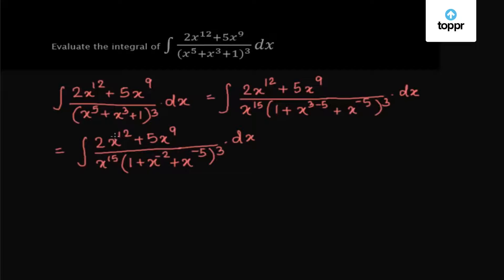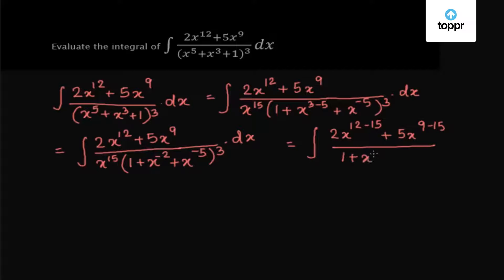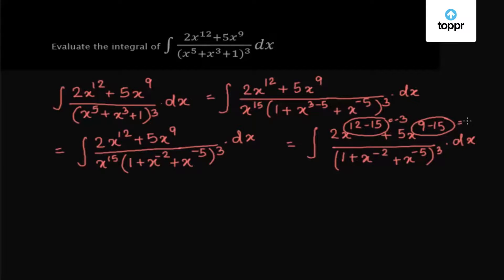Now we cancel out the common factor from the numerator as well as the denominator, such that in the numerator we have 2x to the power 12 minus 15 plus 5x to the power 9 minus 15 upon 1 plus x to the power minus 2 plus x to the power minus 5, whole cube, into dx. Now 12 minus 15 is minus 3 and 9 minus 15 is minus 6.